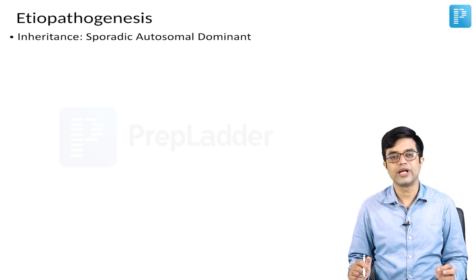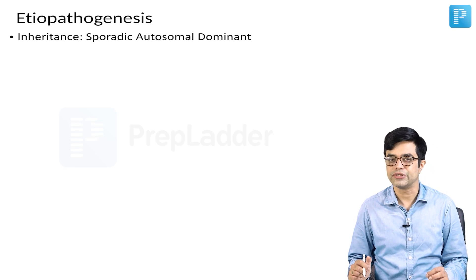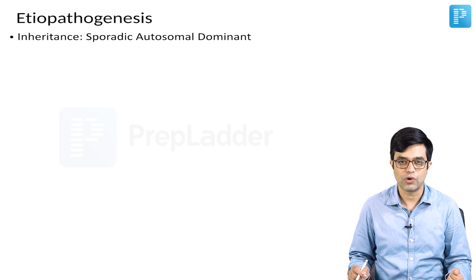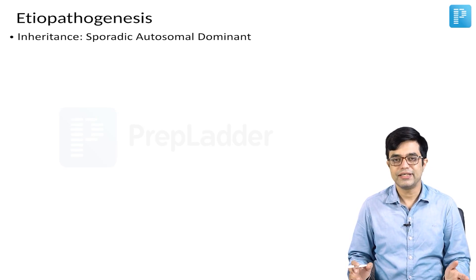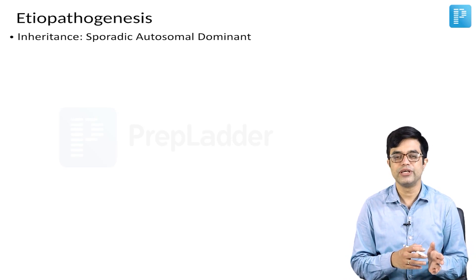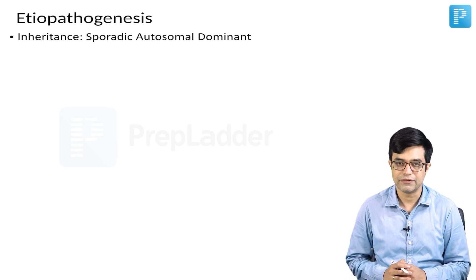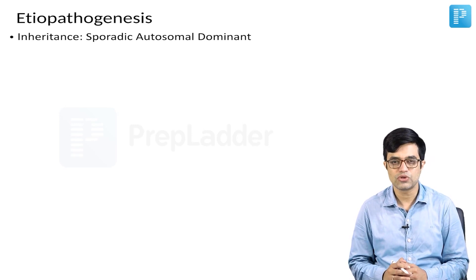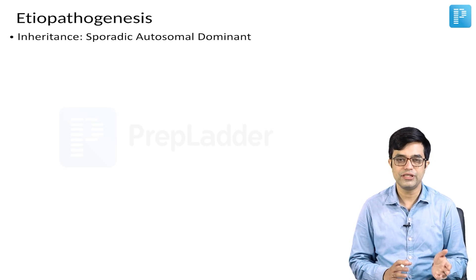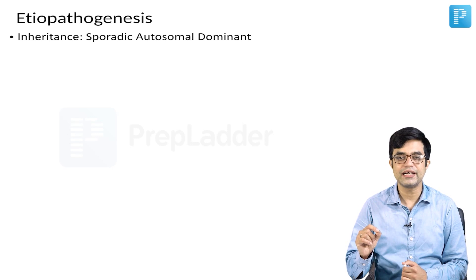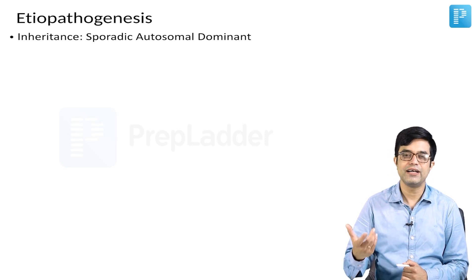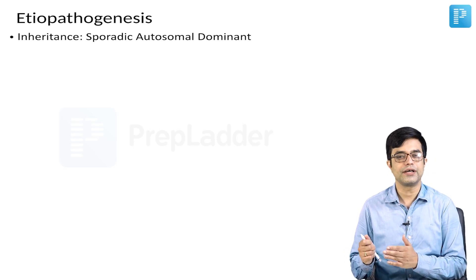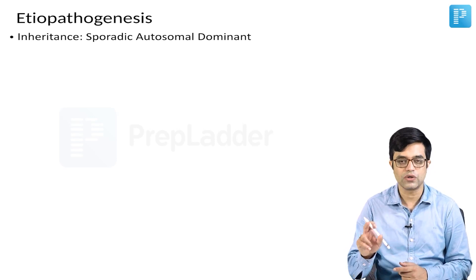Inheritance-wise, it is a sporadic autosomal dominant condition. Autosomal dominant means it is present on the autosomes — the gene is present on chromosome 1. Dominant means that even if one of the genes is mutated, it is enough to produce clinical manifestations. But it is not inherited — it is not passed on to the progeny. Most of these children have a short lifespan and the gene is not transferred to their babies. It is a sporadic autosomal dominant. Why this mutation happens, we do not know, but wherever it happens, it behaves like an autosomal dominant condition.